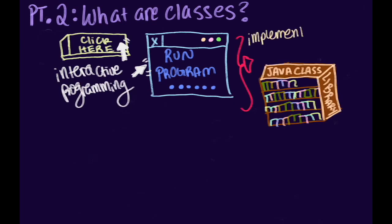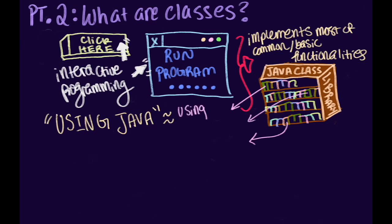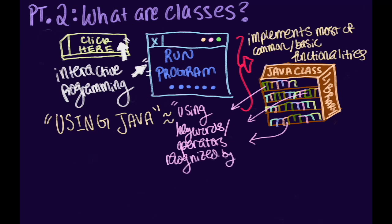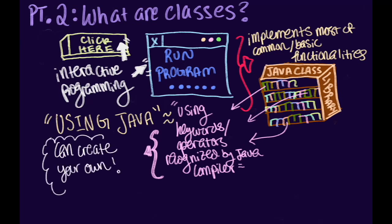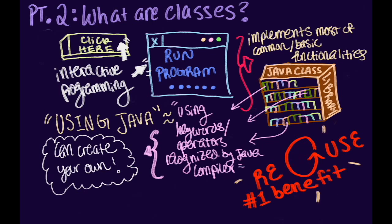Fortunately, each version of the Java language includes a group of classes that implements most of these common and basic functionalities in groupings called class libraries. The standard Java class library already contains dozens of classes. In fact, oftentimes when you refer to using the Java language, you're actually talking about using the Java class library and the keywords and operators recognized by the Java compiler. For more complicated Java programs, you might create a whole set of new classes with defined interactions between them, which can be used to form your own class library for use later in other programs. Such reuse is one of the fundamental benefits of OOP and is why OOP languages are really popular to use and implement.